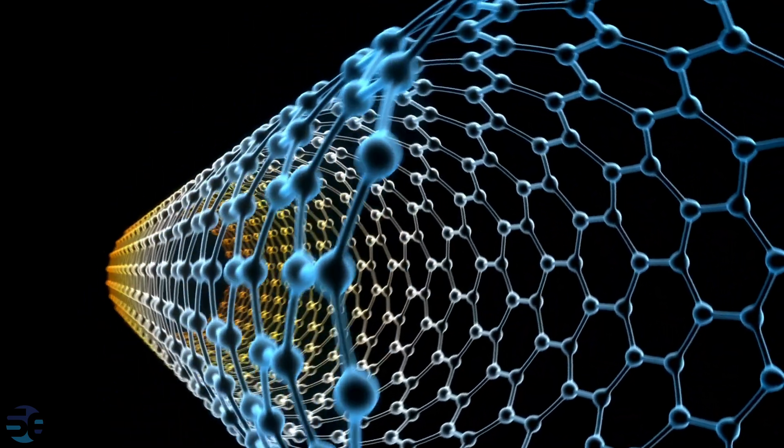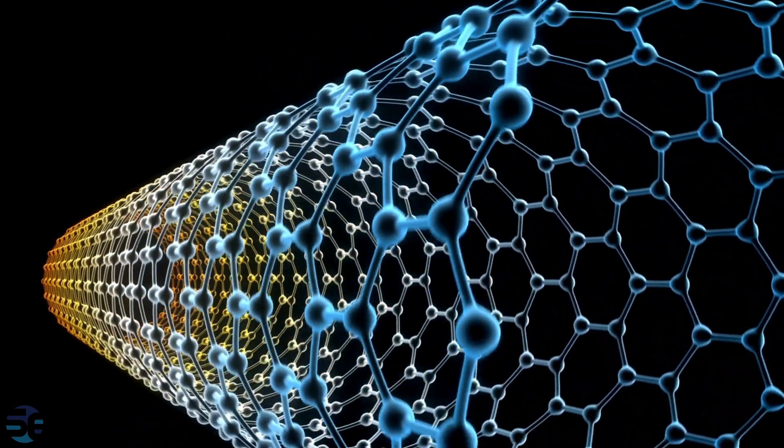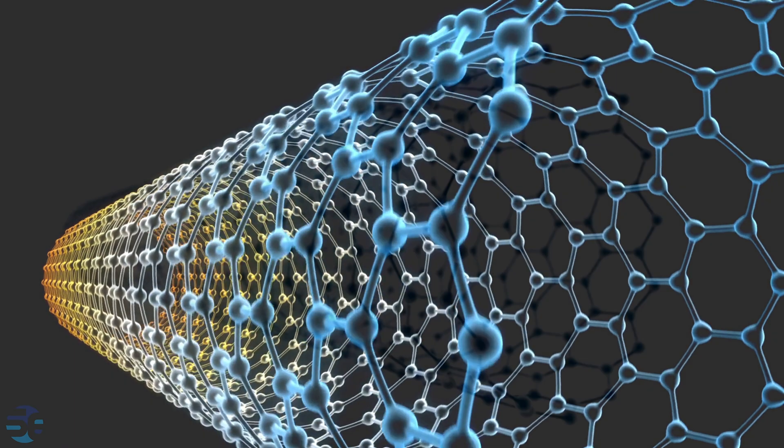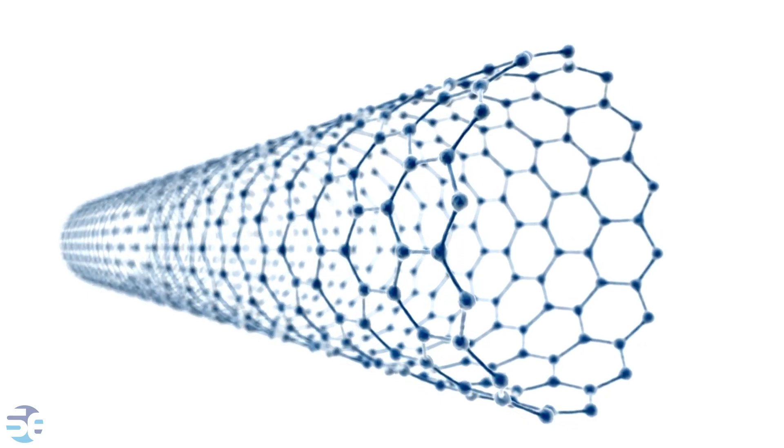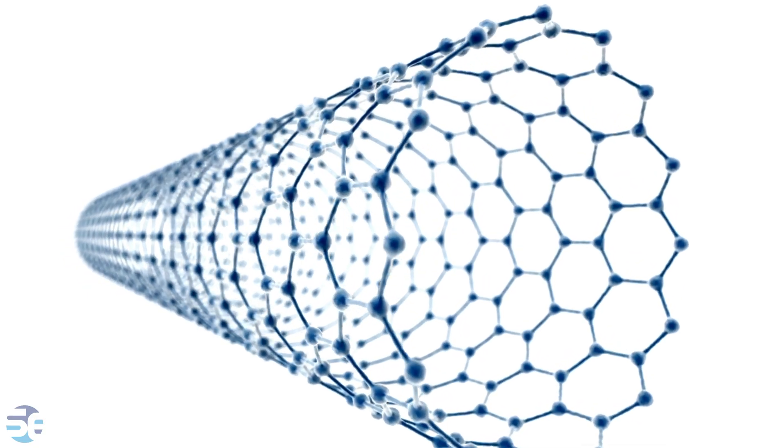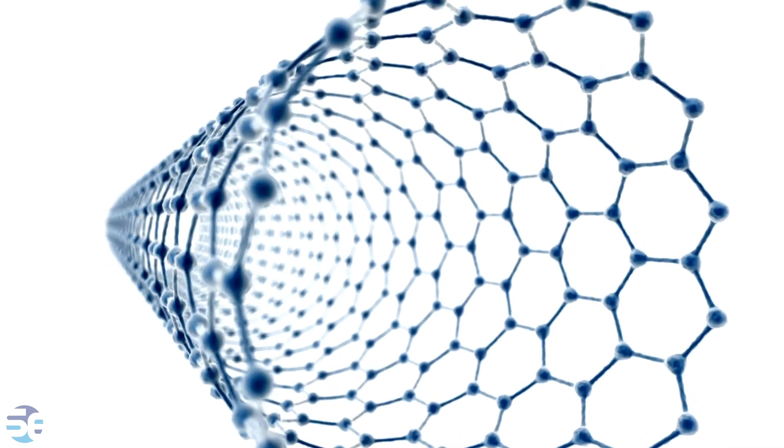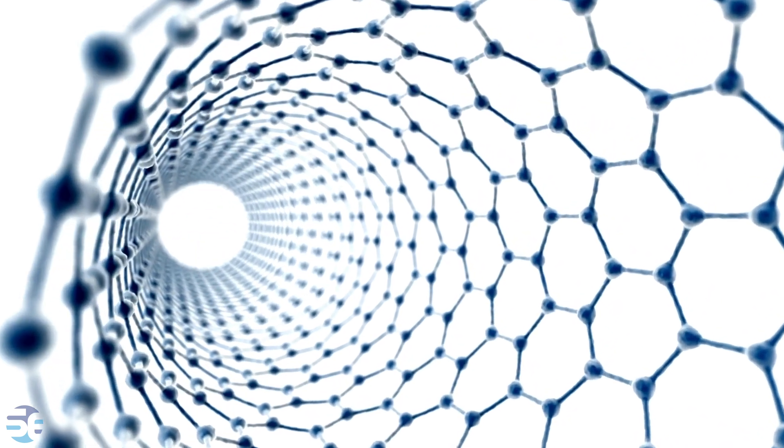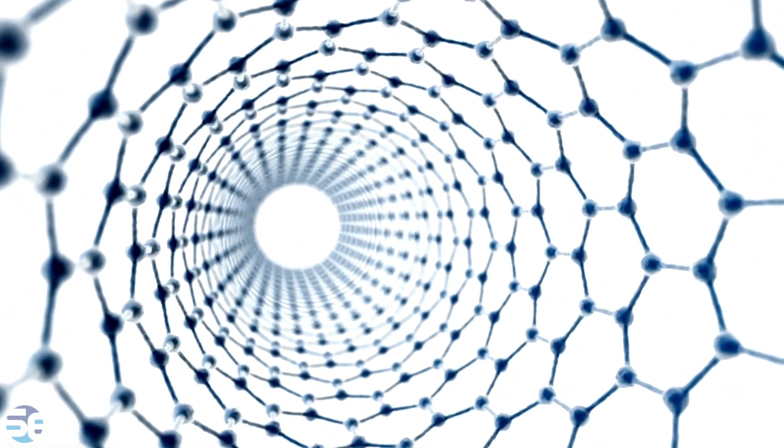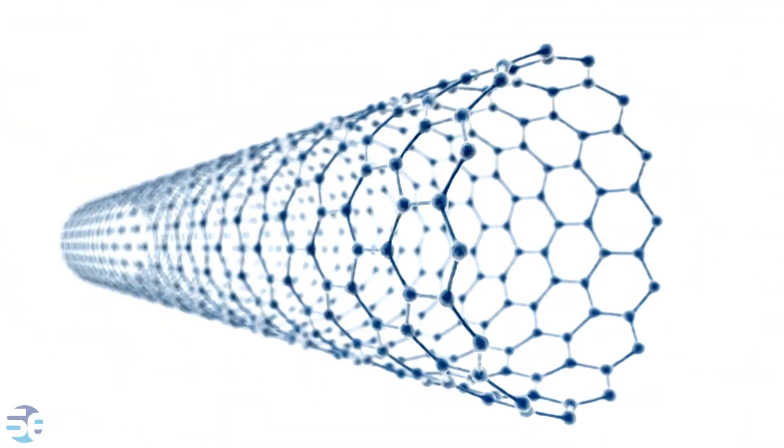Let's begin with single-walled carbon nanotubes, or SWCNTs. These nanotubes consist of a single layer of graphene rolled into a seamless cylinder. SWCNTs exhibit remarkable electrical and mechanical properties, making them ideal candidates for a wide range of applications, from electronics to biomedical devices.